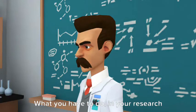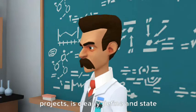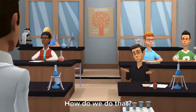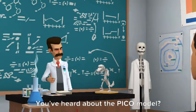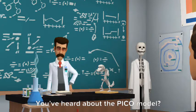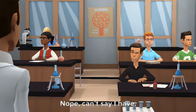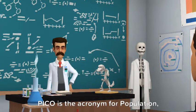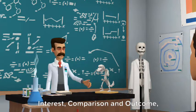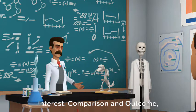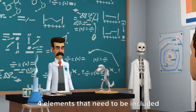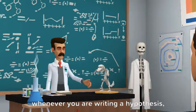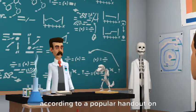What you have to do in your research projects is clearly define and state your hypothesis. How do we do that? You've heard about the PICO model? Nope. Can't say that I have. PICO is the acronym for Population, Interest, Comparison and Outcome. Four elements that need to be included whenever you are writing a hypothesis, according to a popular handout on hypothesis writing.